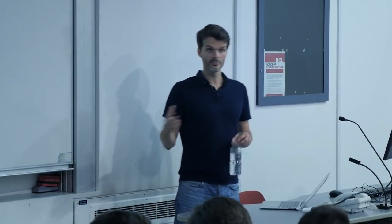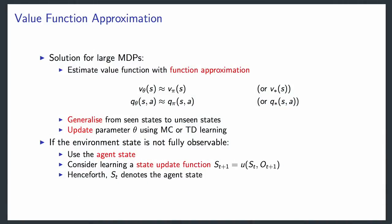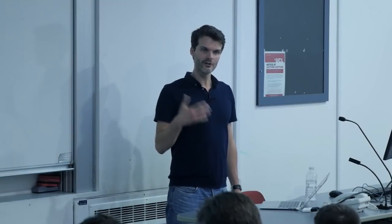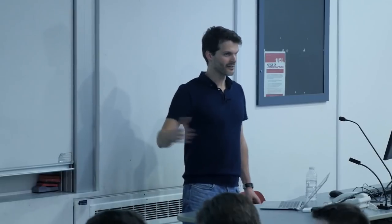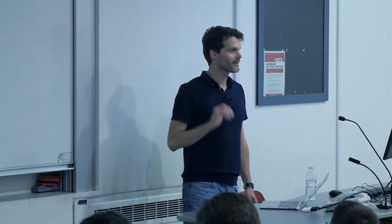The agent state is internal to the agent and might not coincide with the environment state, which could be much larger. One simple way to construct an agent state is to just use your current observation, ignoring the previous agent state. But if you only do that, your potential solution might be limited—the robot can only learn a function directly from observations, which might not always lead to the optimal policy.